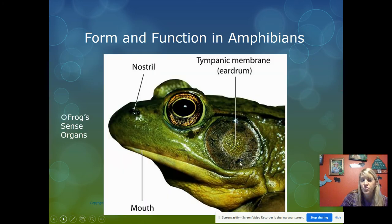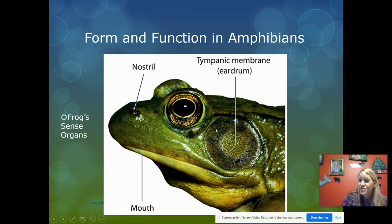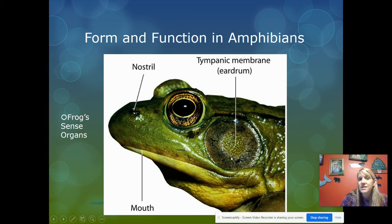Here's a close-up of a frog. You can see the nostril, the mouth, and the eye. They don't have ears like we do — instead they have a tympanic membrane, which is their eardrum, and that is how they hear.